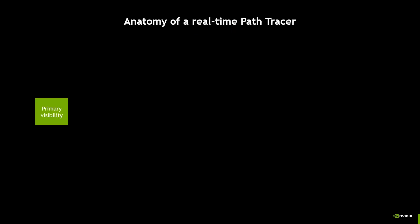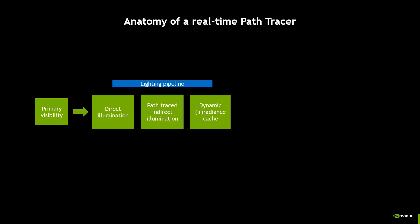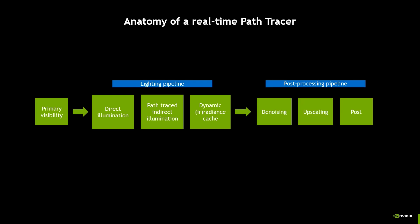So what does it take to make a real-time path tracer? Here's a pipeline of what we think a real-time path tracer should look like. You start with primary visibility to determine which surfaces need to be lit. Then you move to the lighting pipeline, processing direct illumination, indirect illumination, and possibly a radiance cache for terminating long paths. After that, you need to denoise — which is essential with low sample counts — finishing up with upscaling and your own post-processing pipeline.